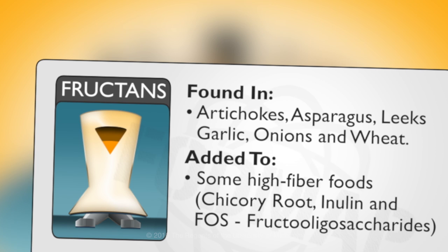Fructans are found in artichokes, asparagus, leeks, garlic, onions, and wheat. Fructans are also added to some processed foods, especially those sold as high fiber, usually in the form of chicory root, inulin, or something called FOS, fructooligosaccharides.